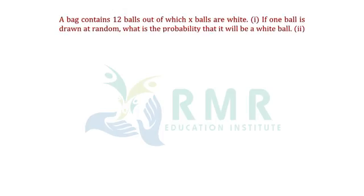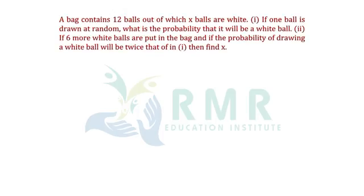A bag contains 12 balls out of which X balls are white. First condition: if one ball is drawn at random, what is the probability that it will be a white ball? Second condition: if 6 more white balls are put in the bag and the probability of drawing a white ball will be twice that of the first condition, then find X.